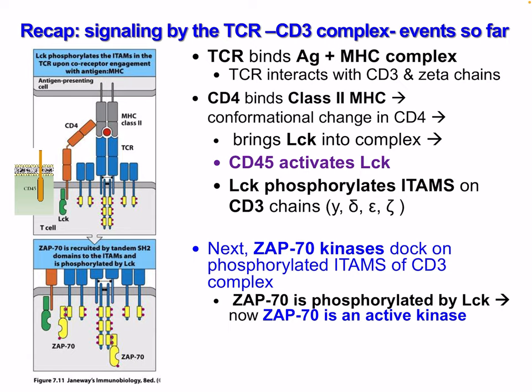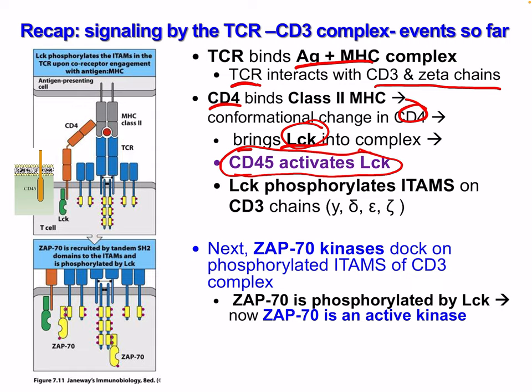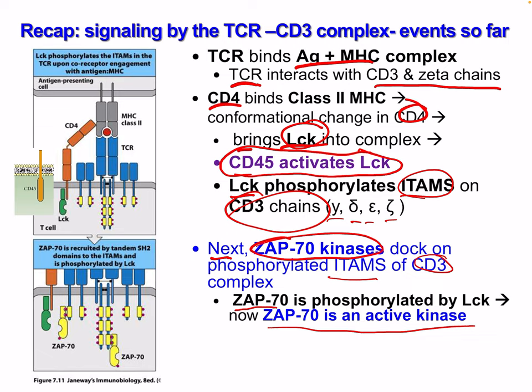To recap: the T cell receptor binds the antigen-MHC complex; the T cell receptor interacts with CD3 Zeta chains activating ITAMs; CD4 binds class 2 MHC with a conformational change bringing LCK into the complex. LCK is usually inactive so CD45 activates it. LCK then phosphorylates ITAMs on CD3 chains — gamma, delta, epsilon, and zeta. ZAP70 docks on phosphorylated ITAMs of CD3 complexes via tandem SH2 domains and is phosphorylated and activated by LCK.